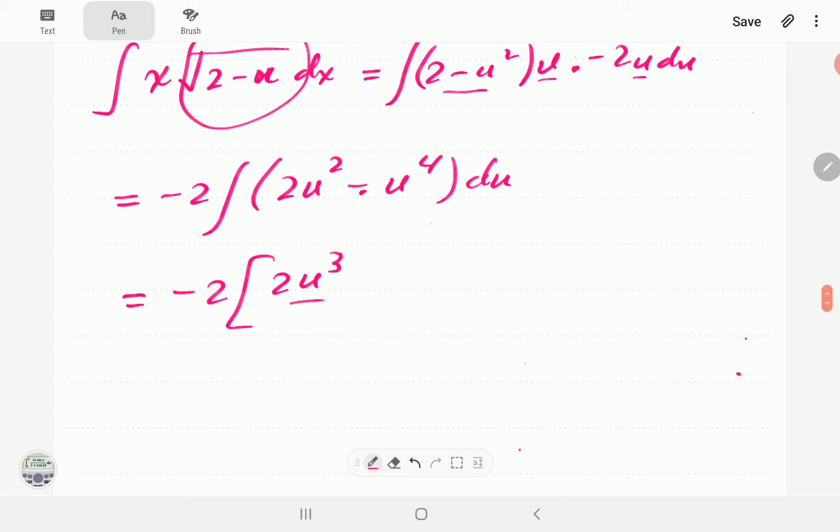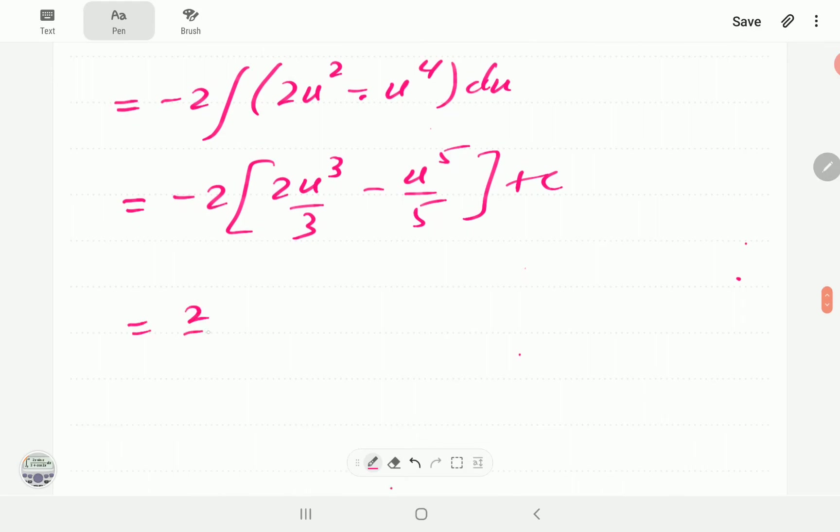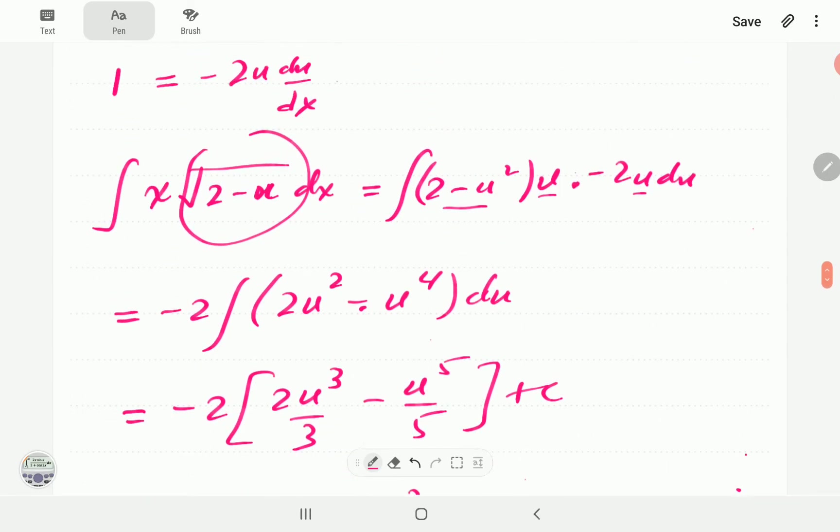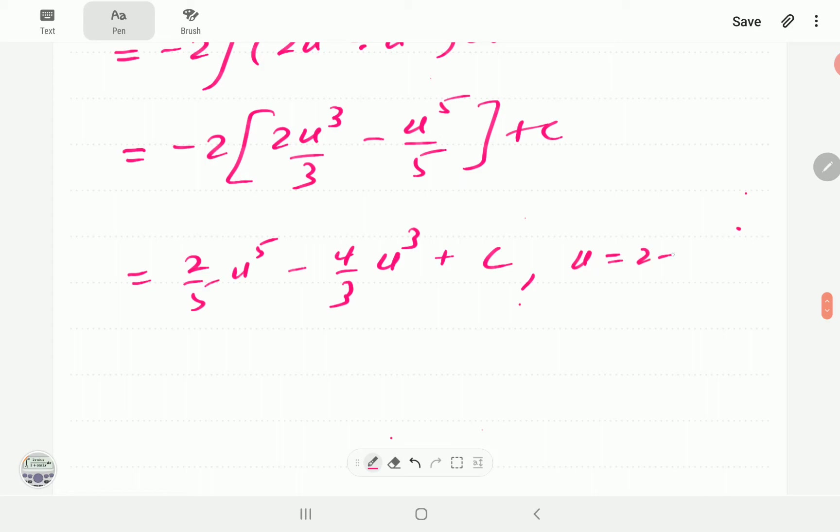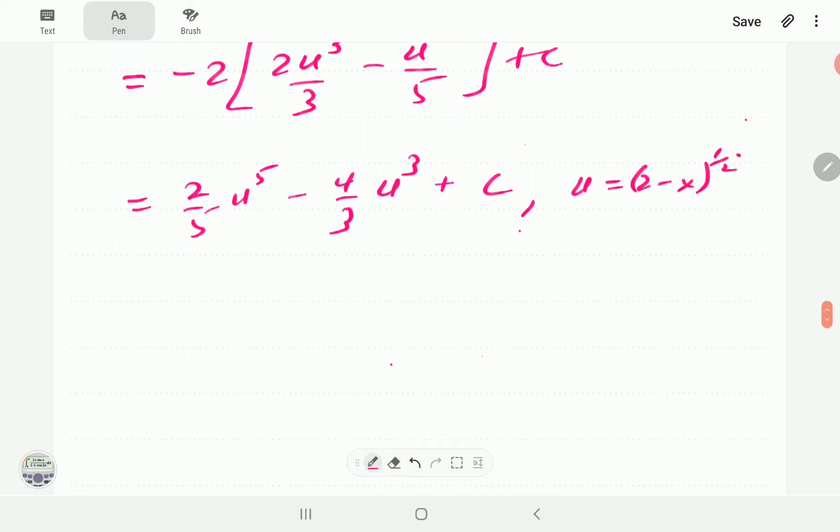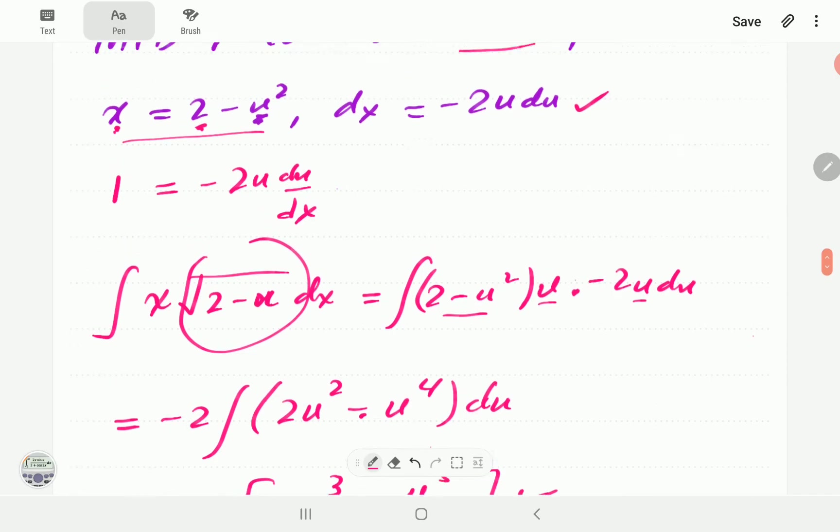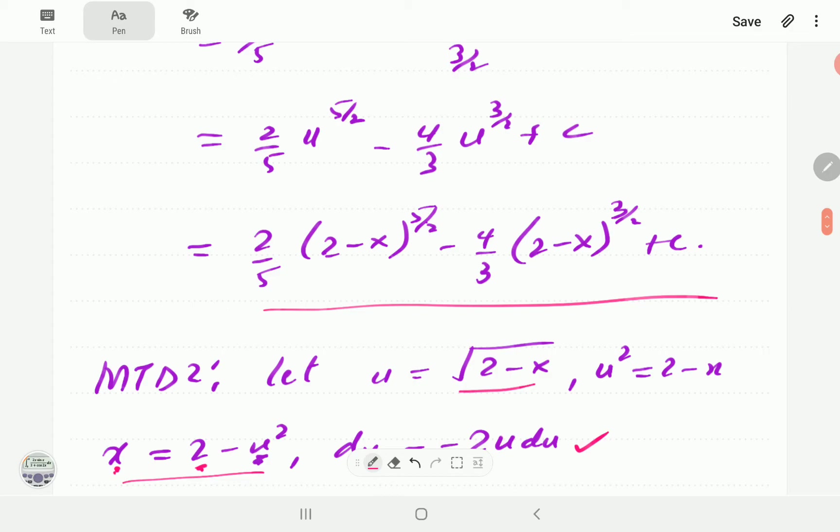It's going to be 2u³/3 minus u^5/5. So it's going to be 2/5 u^5 minus 4/3 u³ plus c. Now remember this time u is √(2-x). So it's 2/5 (2-x)^(5/2) minus 4/3 (2-x)^(3/2) plus c, which is exactly the same expression as we got there.